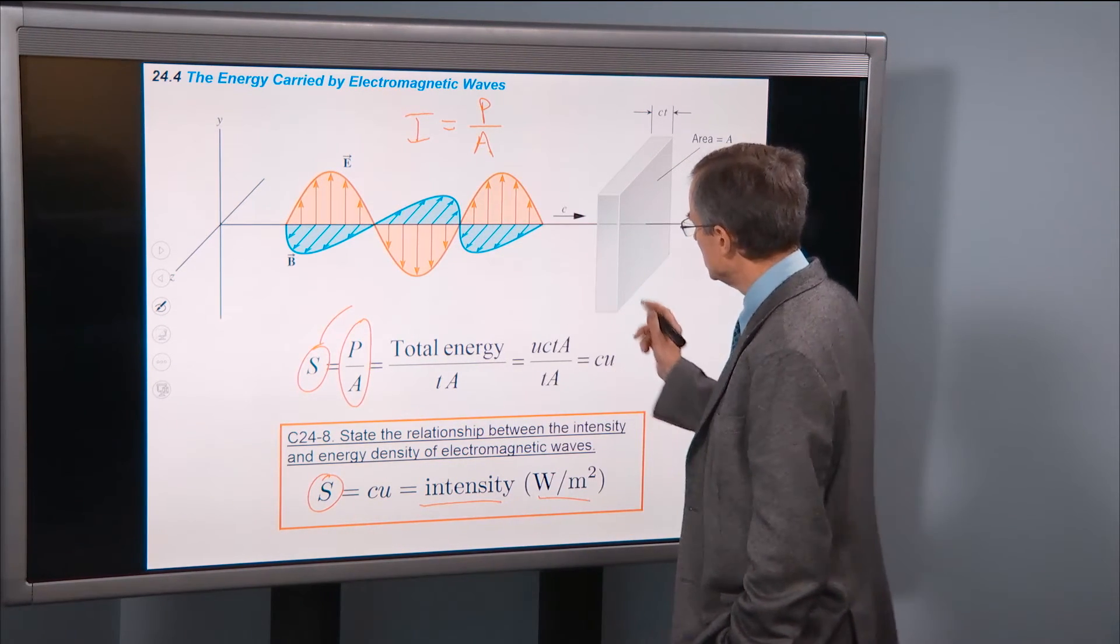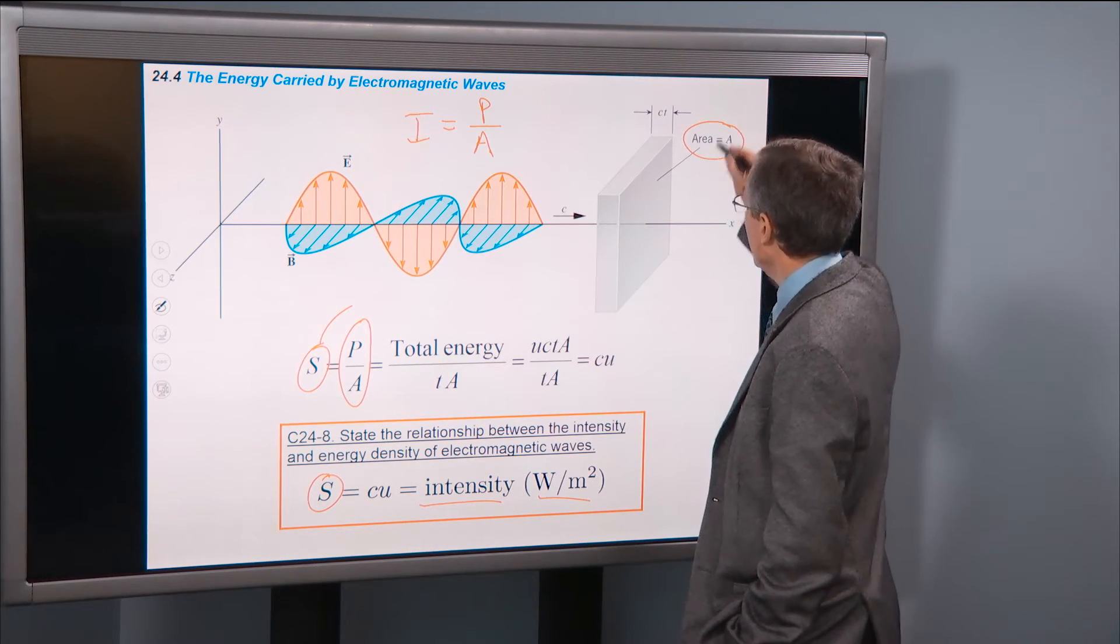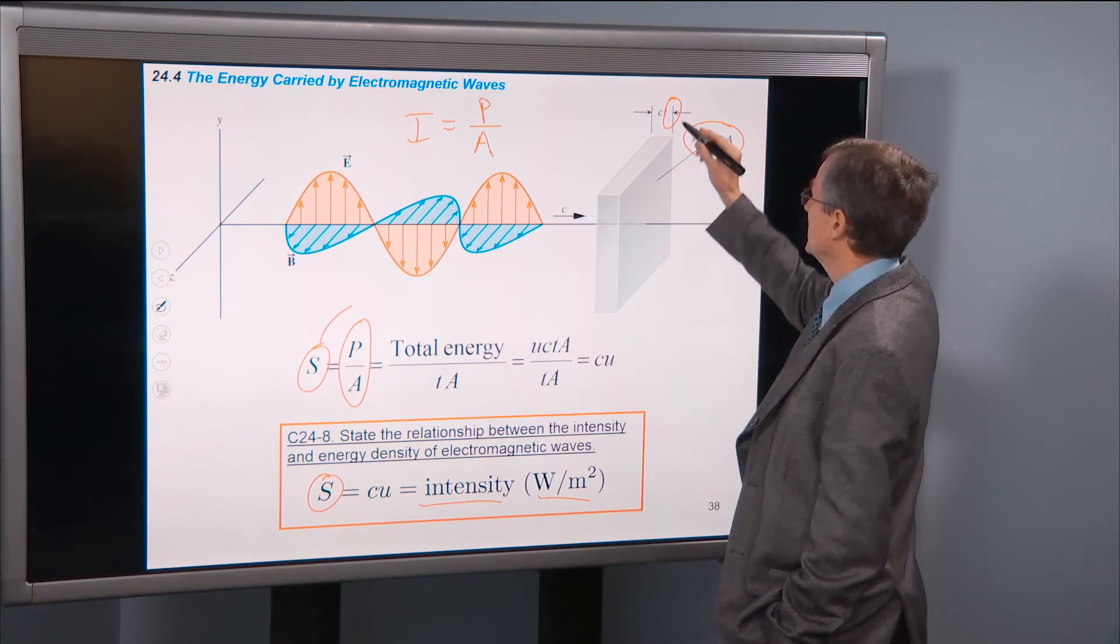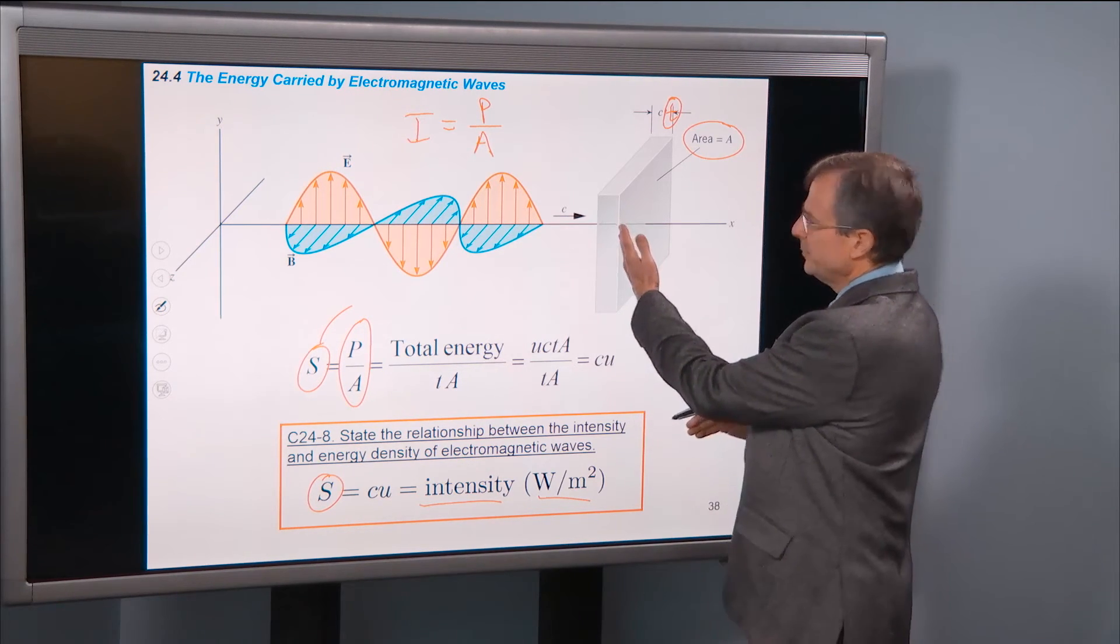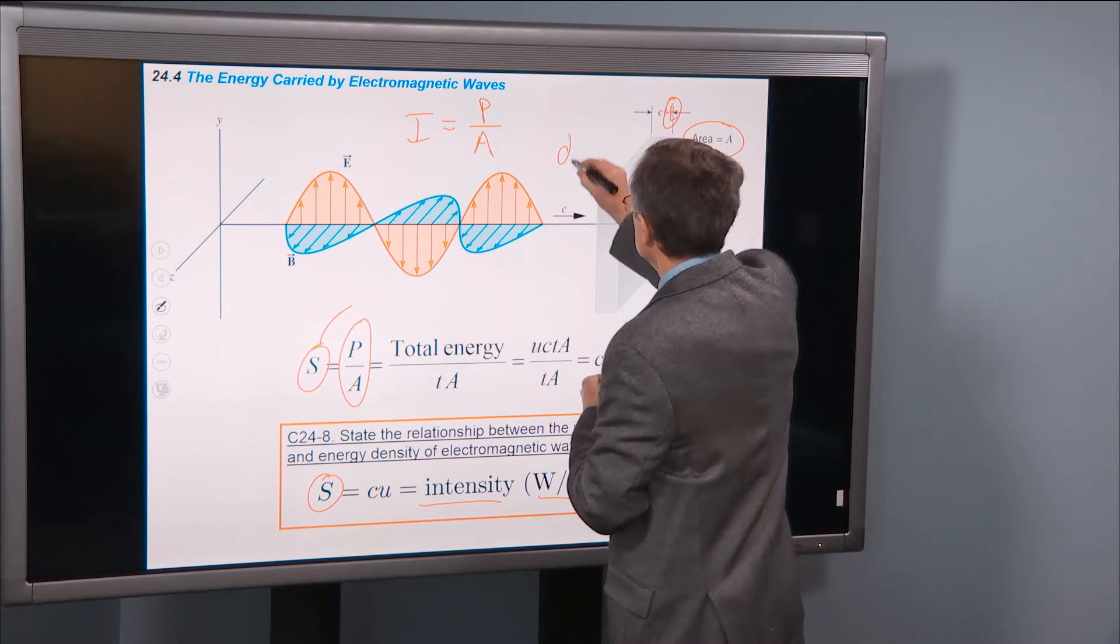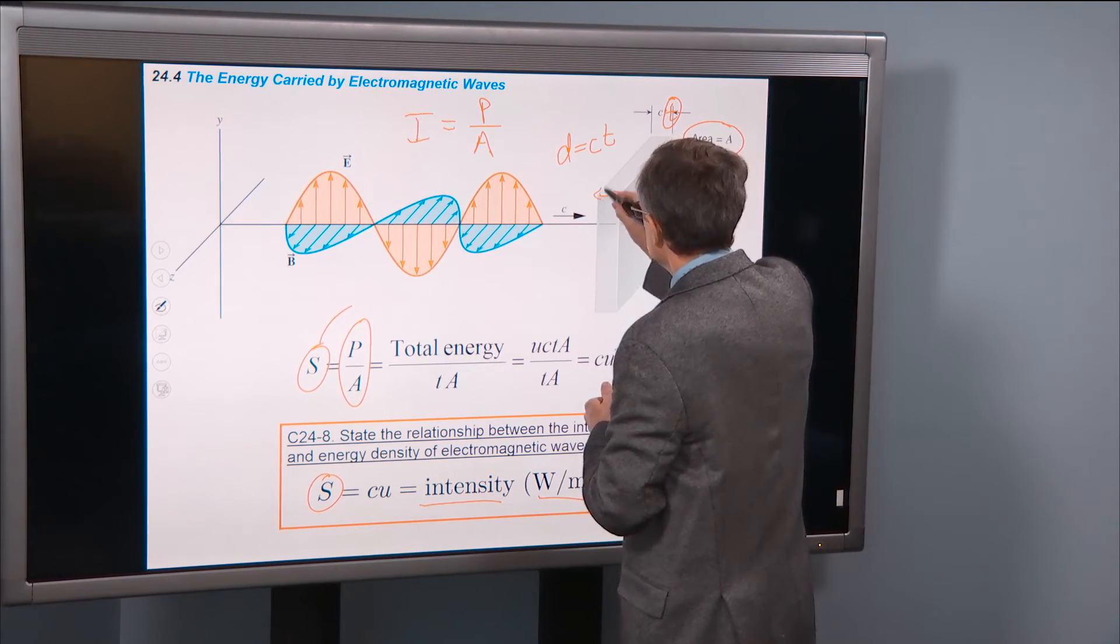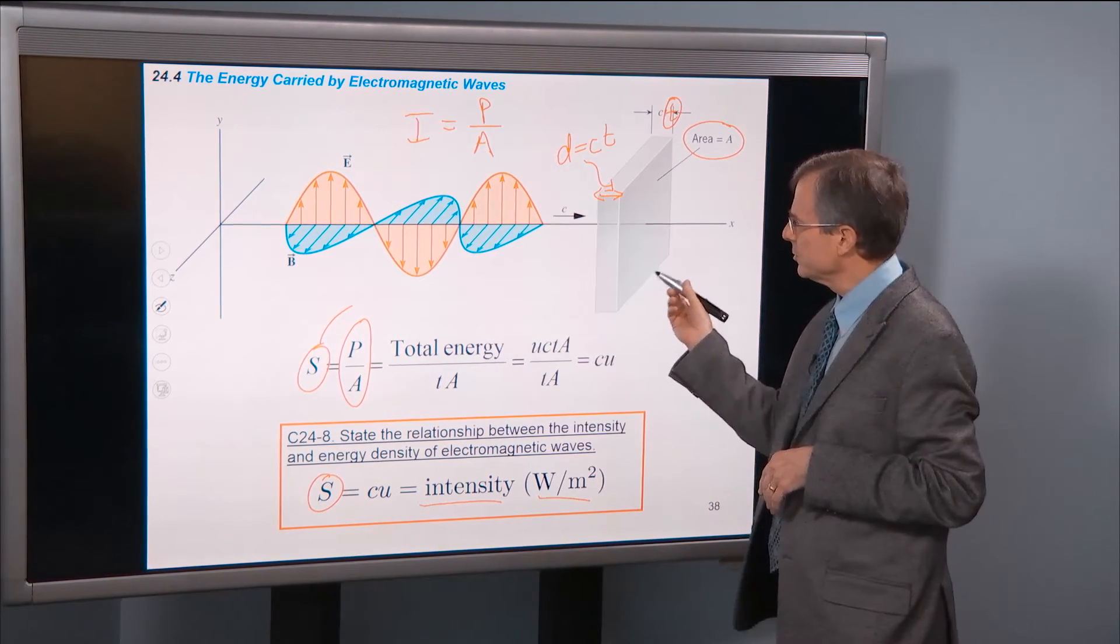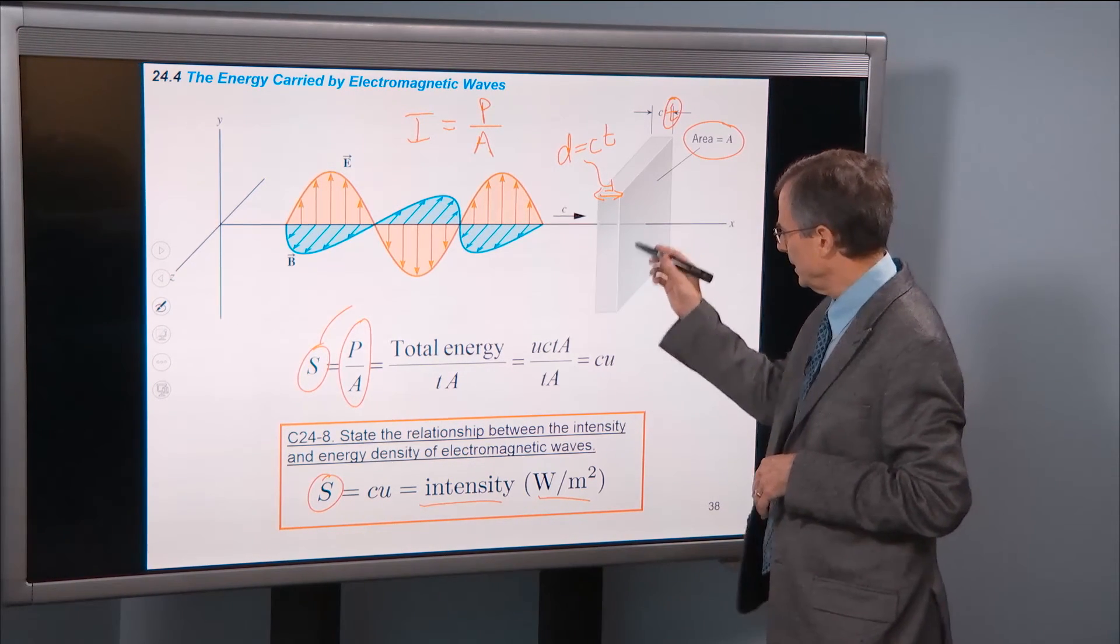If we look at this diagram, when we ask about how much power passes through this area A in a time t, I just covered up the t, there's a t here. The distance traveled by the wave in a time t is c times t, so distance is the speed times the time. So that's this distance here.